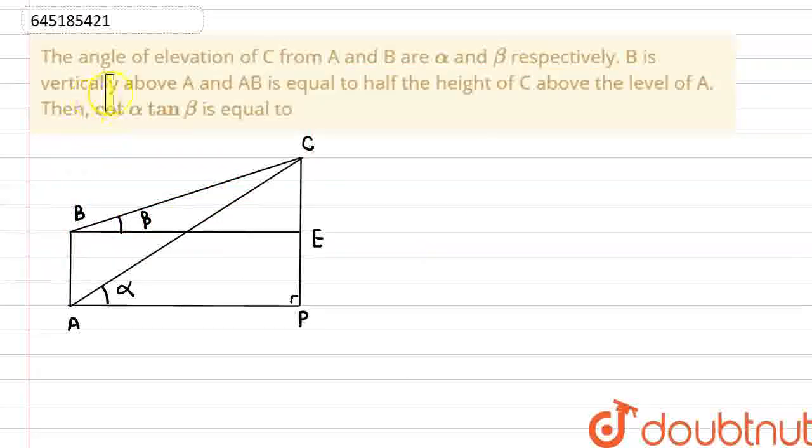Hello everyone, the question is: the angle of elevation of C from points A and B are alpha and beta respectively. B is vertically above A and AB is equal to half the height of C. We have to find the value of cot alpha tan beta.